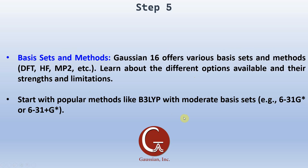Step 5: Basis sets and methods. Gaussian 16 offers various basis sets and methods including DFT, HF, and MP2. Learn about the different options available and their strengths and limitations. Start with the popular method B3LYP with a moderate basis set like 6-31G* or 6-31+G*. B3LYP with 6-31G* is an optimum basis set used in many calculations.